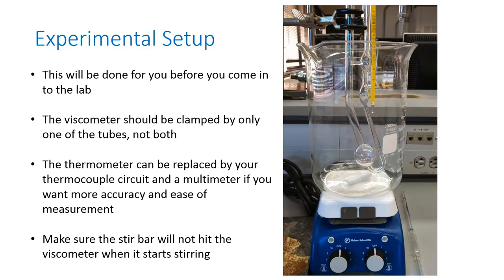Another thing to make sure of before you add the water is that the viscometer is clamped at such a height that the stir bar is not going to hit it when it starts stirring. The viscometer is a pretty fragile piece of glassware, and if you break it during the experiment, you're going to have to start all over because your calibration will only apply to that specific piece of glassware.